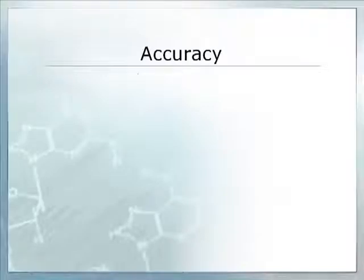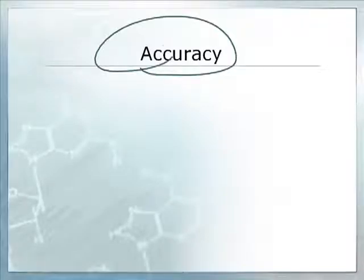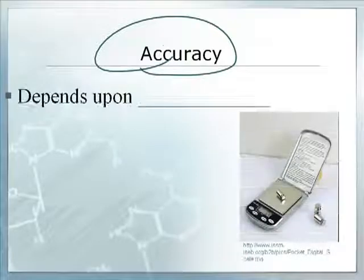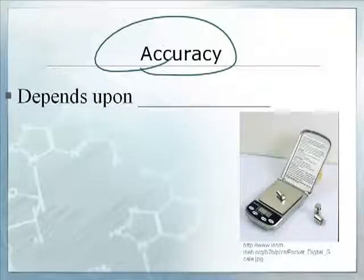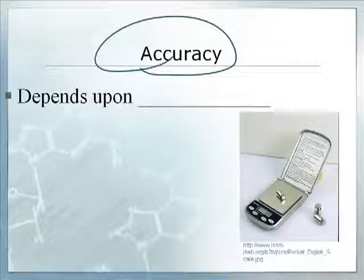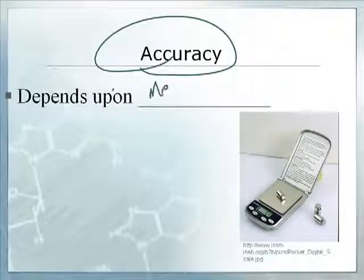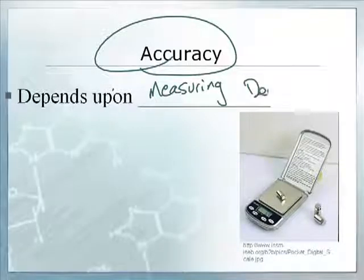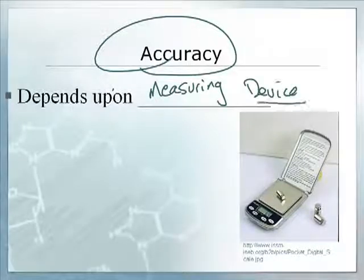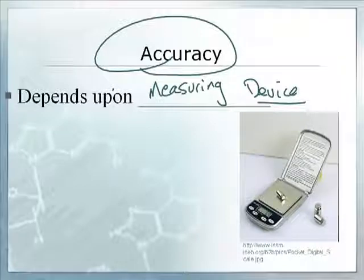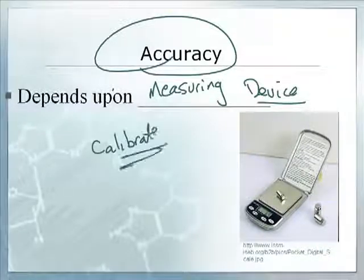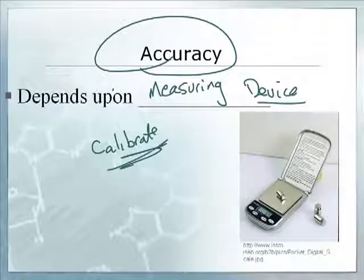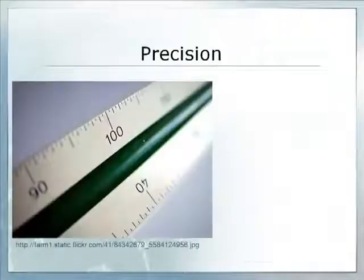So the first thing I want to do is talk about accuracy. Do you know what accuracy is? Well, it's how close you are to a given value or to a target. Yep, so that's right. So it actually depends upon the measuring device. If you want to be accurate, you need a good measuring device. Yeah, you've got to make sure it's calibrated.